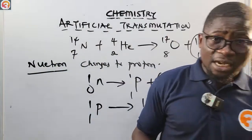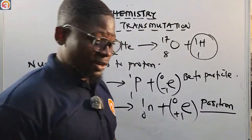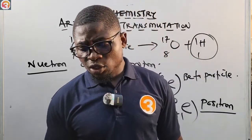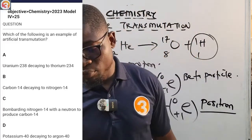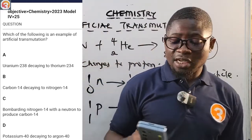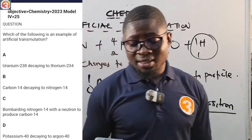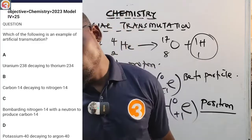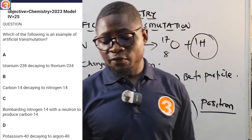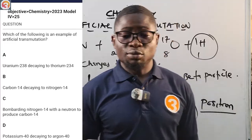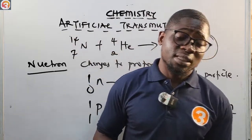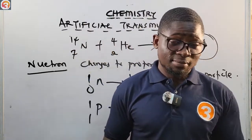Now going back to the OT School Jump app question: which of the following is an example of artificial transmutation? Option A — uranium-238 decaying to thorium-234: No. Option B — carbon-14 decaying to nitrogen-14: No. Option C — bombarding nitrogen-14 with a neutron to produce carbon-14: Yes, this is correct. Option D — potassium-40 decaying to argon-40: No. The correct answer is C. Download the app, like, comment, subscribe — your grand commander says goodbye, see you in the next episode.